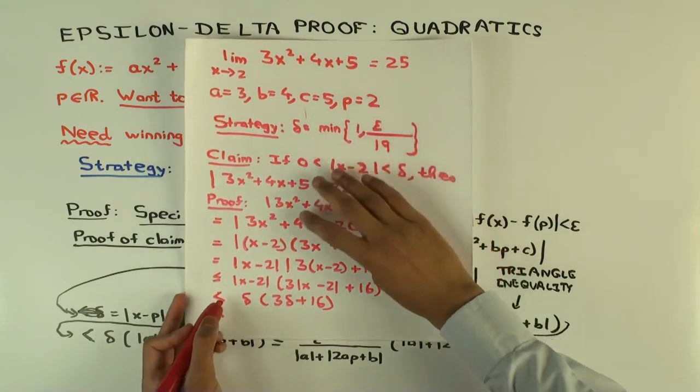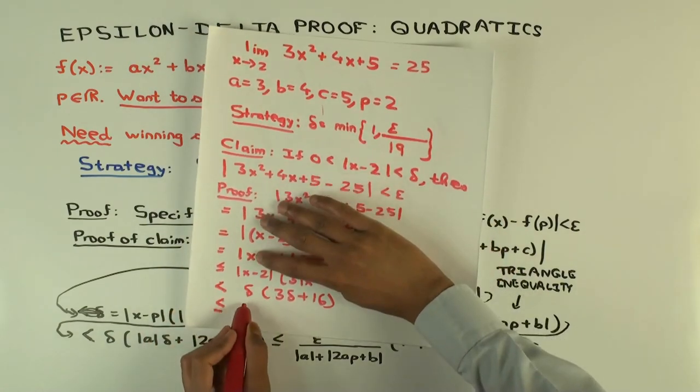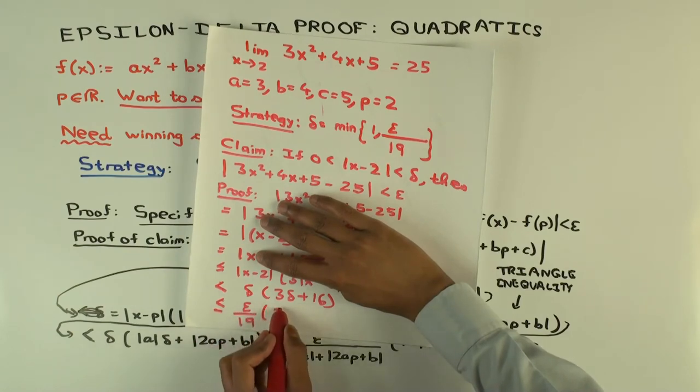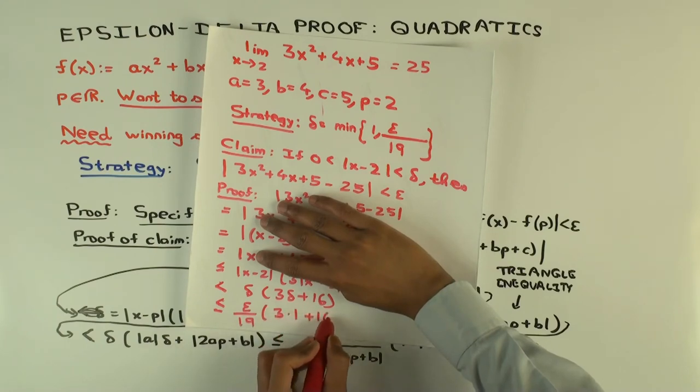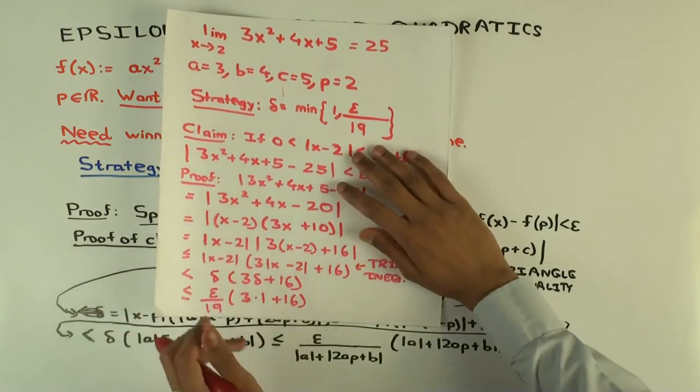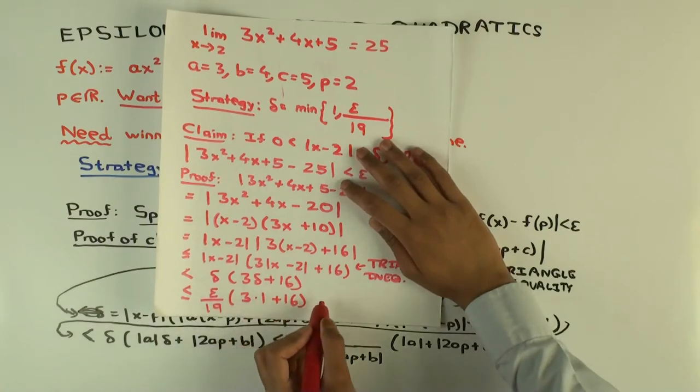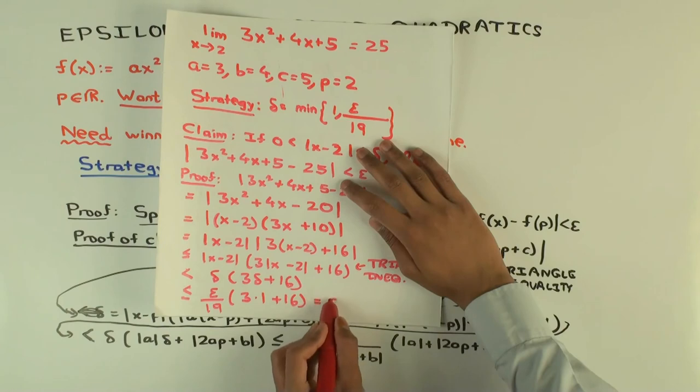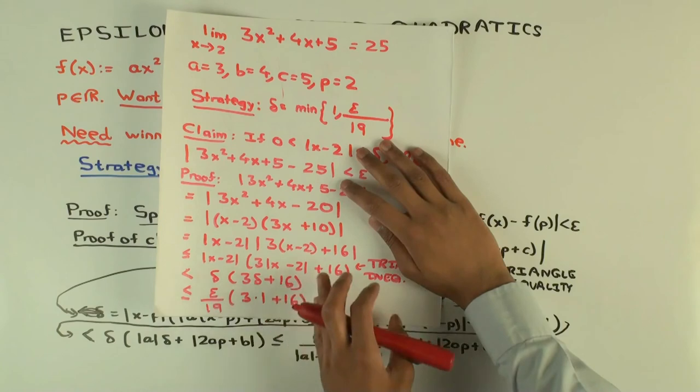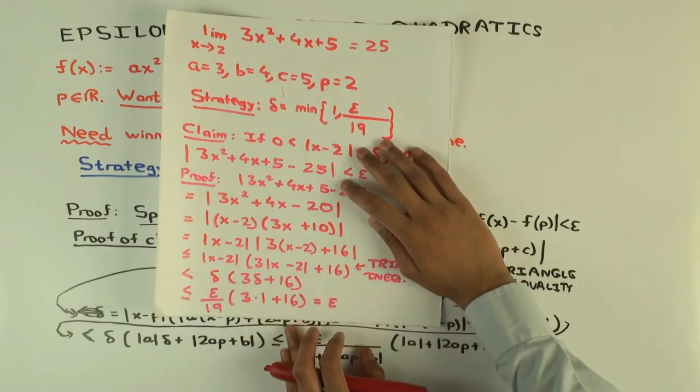For the inner delta, you use that it's less than 1. And what does that simplify to? 3 times 1, what does that simplify to? 19 times epsilon over 19, so what is that? Epsilon.